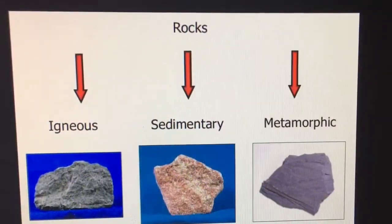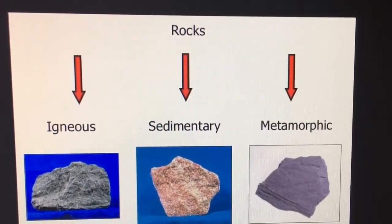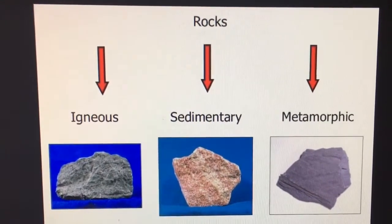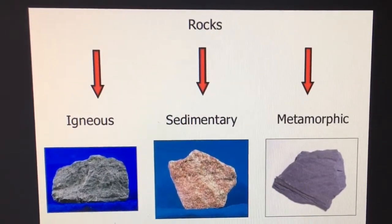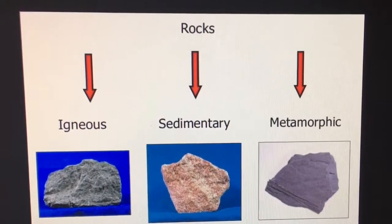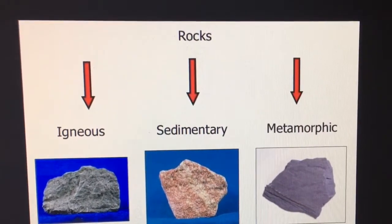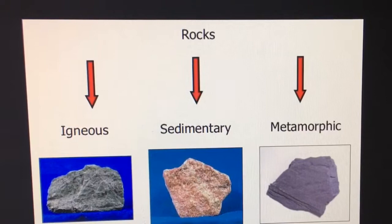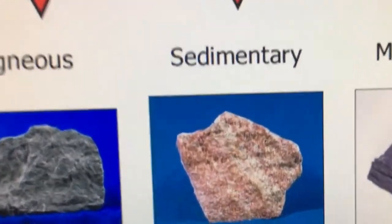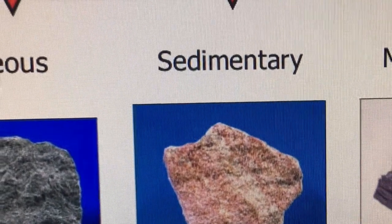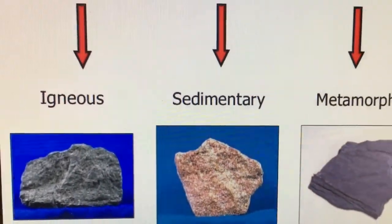We'll be asking who remembers what three kinds of rock are from week 14. The three kinds of rock are sedimentary, metamorphic, and igneous. We'll be asking what type of rock you think is most susceptible to erosion — and that would be sedimentary. The reason is because it's softer and more porous.